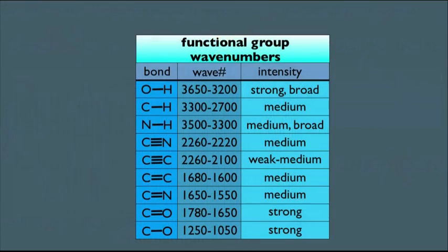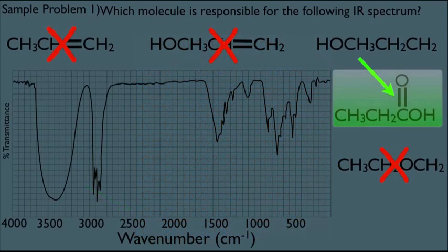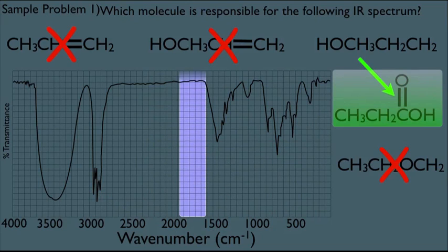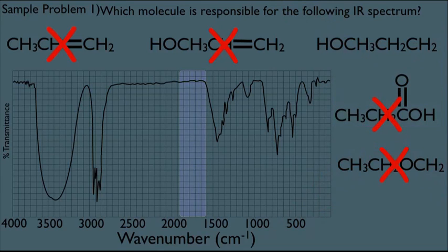Let's go back to our chart here. Carbonyl groups right here have a strong, very obvious peak at 1650 to 1780. And if we go back to our IR spectrum here, we'll notice there is nothing going on right there. No, definitely not a strong peak. So that rules out this molecule, which means this is the answer. This must be the molecule responsible for this spectrum.